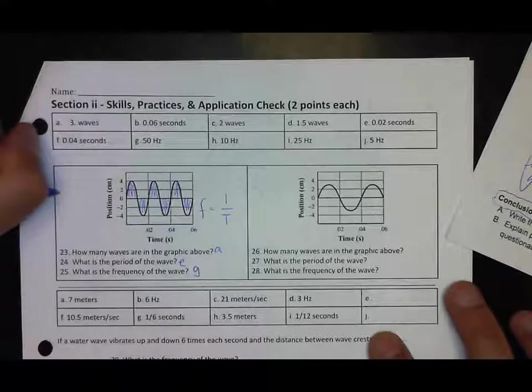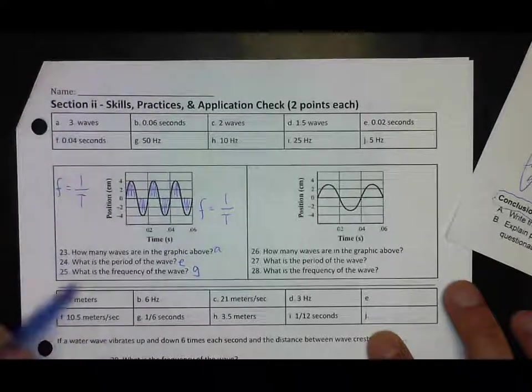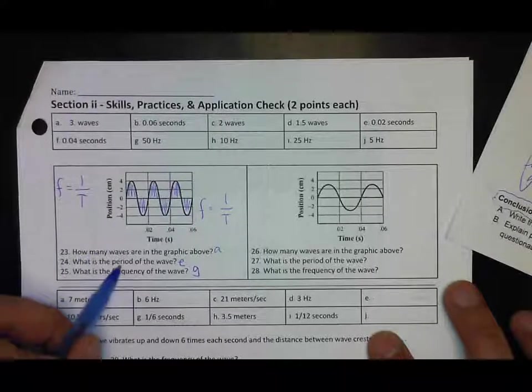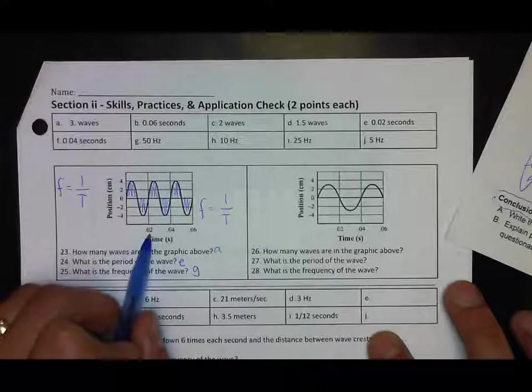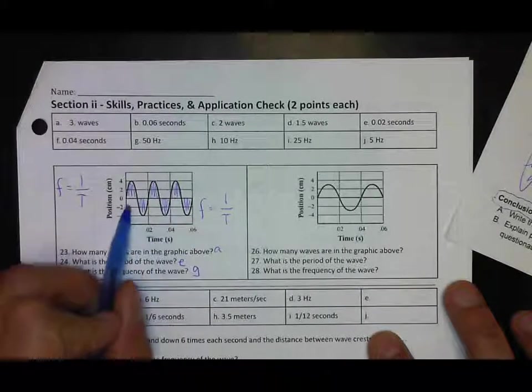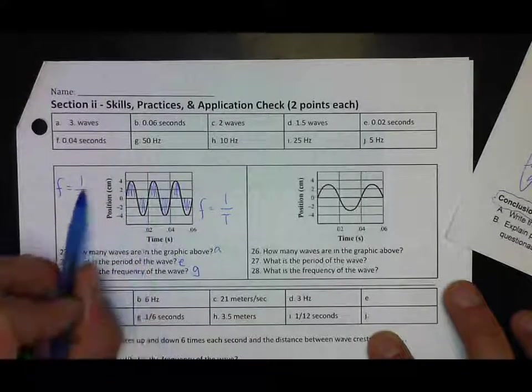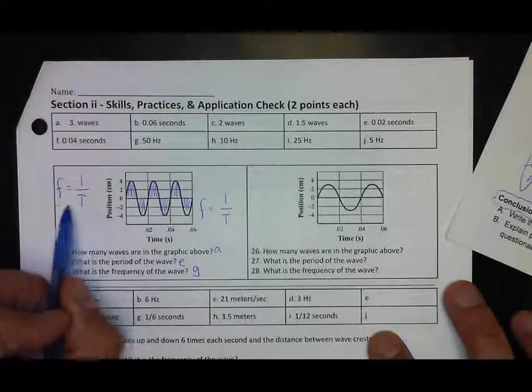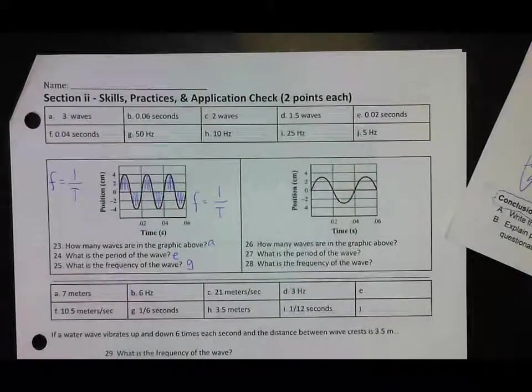If we do the math, F equals one over T. T is the period. What was the period of our wave? It's the amount of time for one wave, it's 0.02. If I do one divided by 0.02, I should get 50. You do the same thing here for that one, so I'm going to skip that.